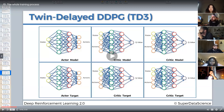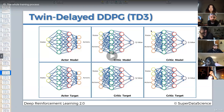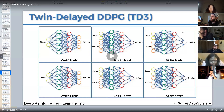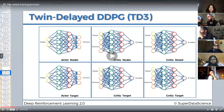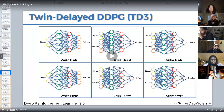Then we do back propagation and update these models using an Adam optimizer — just basic neural nets. We're back propagating based on the mean squared error loss function. We take the two Q values, add them together, and back propagate on both together. This portion is the deep deterministic policy gradient — it's an actor-critic model based upon deep Q learning, a combination of those two things.